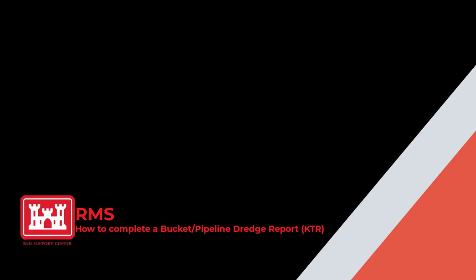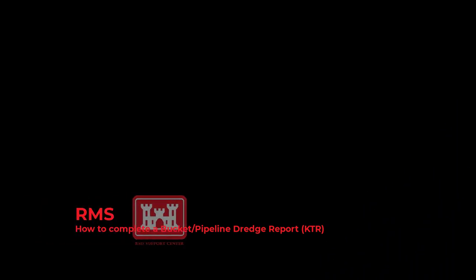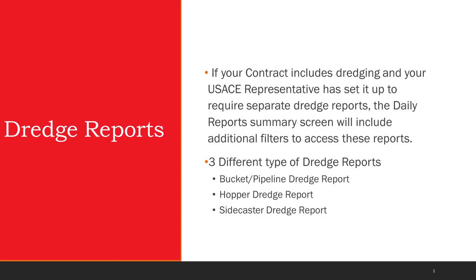Welcome. The topic for this RMS support tutorial video is how to complete a bucket pipeline dredge report. Now let's get started. If your contract includes dredging and your USACE representative has set it up to acquire separate dredge reports, the daily report summary screen will include additional filters to access these reports. There are three different types of dredge reports: bucket and pipeline, hopper, and side caster. This video covers the instructions for the bucket and pipeline dredge report. The hopper and side caster dredge reports will be included in another video — see the link in the description box below.